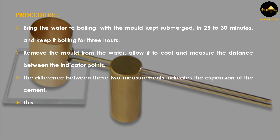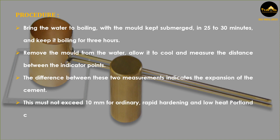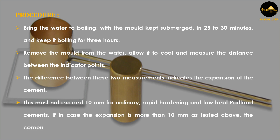This expansion must not exceed 10 mm for ordinary, rapid hardening, and low heat Portland cements. If in case the expansion is more than 10 mm as tested above, the cement is said to be unsound.